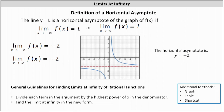There is also a relationship between limits at infinity and horizontal asymptotes. The line y = L is a horizontal asymptote of the graph of f(x) if the limit as x approaches negative infinity or the limit as x approaches positive infinity equals L. For example, looking at the graph, the limit as x approaches negative infinity of f(x) equals negative two, so there is a horizontal asymptote of y = −2. Similarly, the limit as x approaches positive infinity also equals negative two, since the function values approach negative two in both directions.